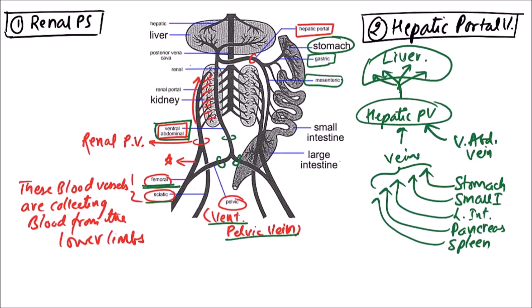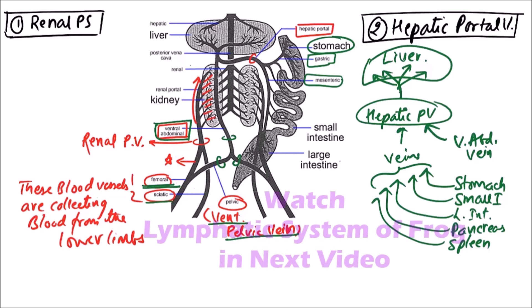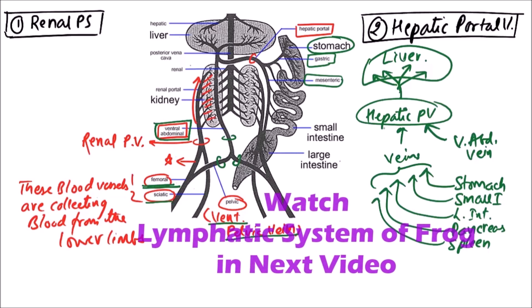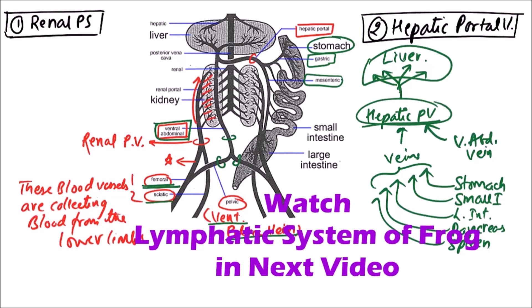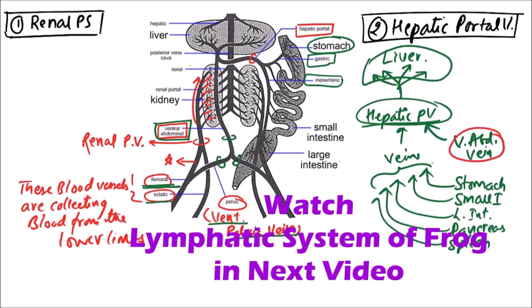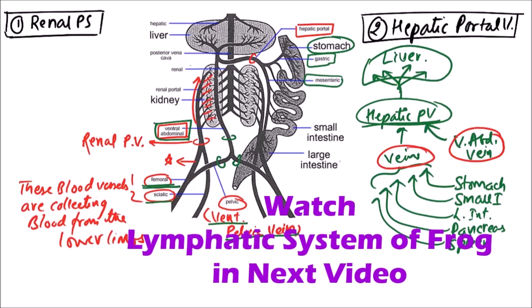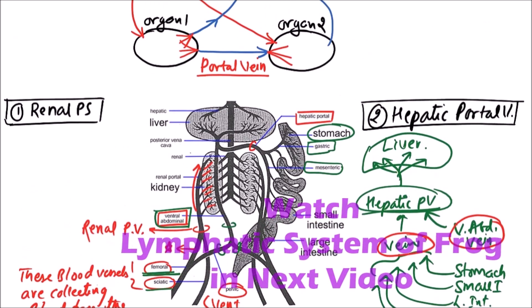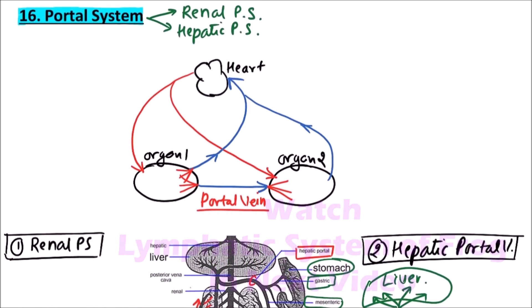To conclude: in the renal portal system, the renal portal vein is formed by a branch from the femoral and the sciatic vein. In the hepatic portal system, the hepatic portal vein is mainly contributed by the ventral abdominal vein and the veins from the gut. So this is about the portal system in frog. Thanks for watching this video.